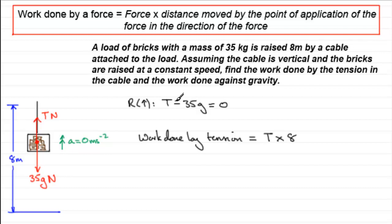And so if we rearrange this, you can see that therefore T is equal to 35g. So if we were to put that value into here, we've got 35 then times g, g being 9.8 if we take it as that value, and then times the 8. And if you do that, you'll find that you get 2744 joules.